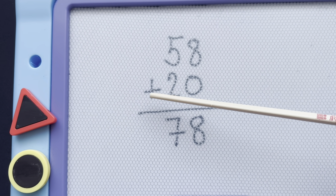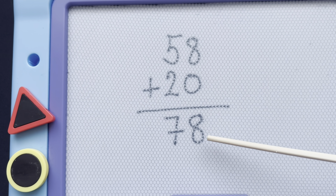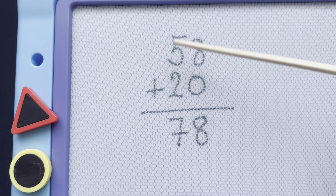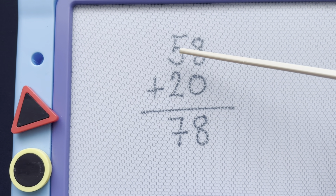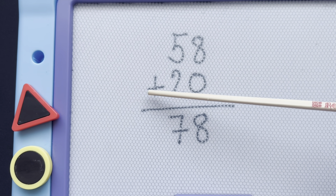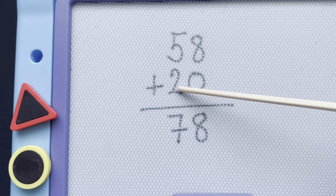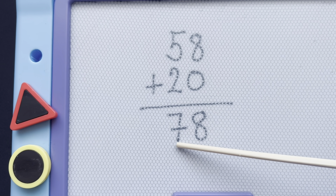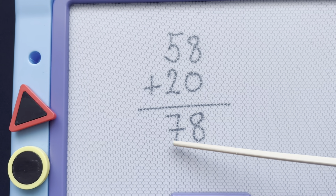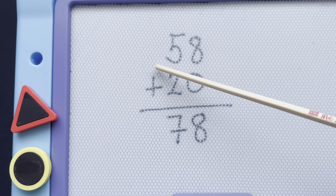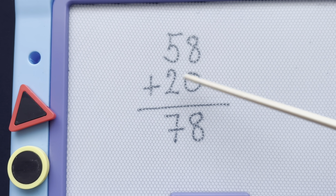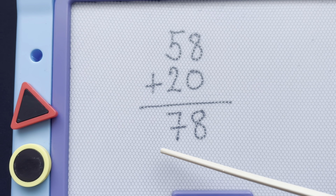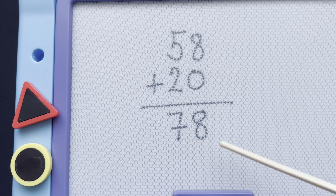8 plus 0 is equals to 8, and then the second column: 5 add 2 is equals to 7. Therefore, 58 plus 20 is equals to 78.